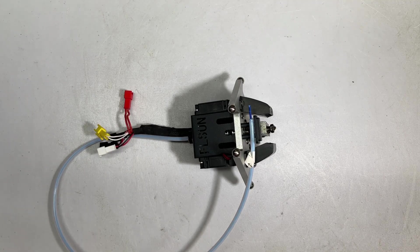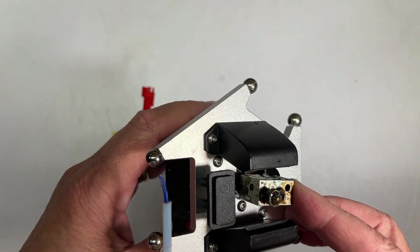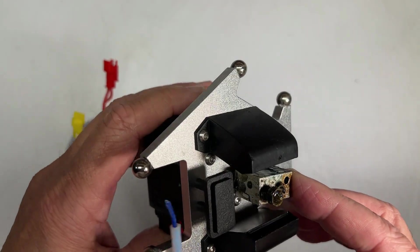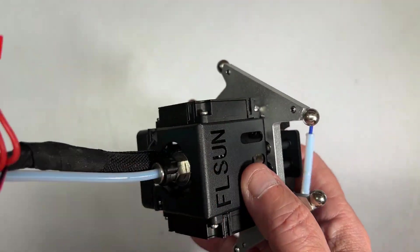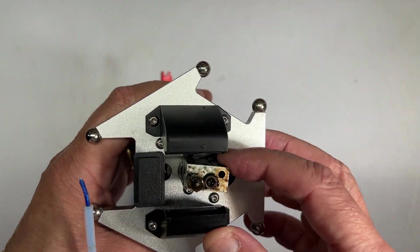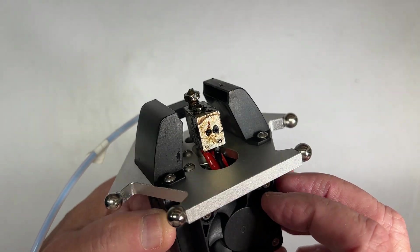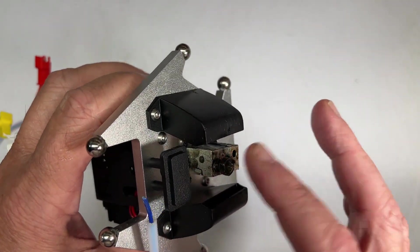This is just going to be a short video on how to totally remove the FL Sun Super Racer heat block from the effector. You can see this one here is crooked, it's got stuff all melted all over it, so we're going to change this one out completely.